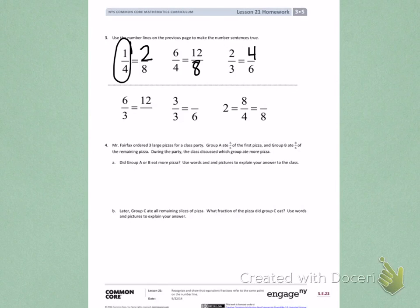When I look at this problem, I see group A ate 6 sixths of the pizza and group B ate 8 sixths of the pizza. So I'm going to draw that.